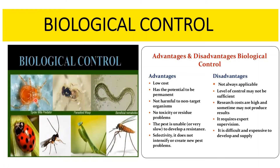The advantages of biological control are: there is no usage of chemicals; biological control has no adverse effect on human health or the environment; it is specific to particular pests; and it can provide a long-term solution to a pest problem with no environmental contamination.